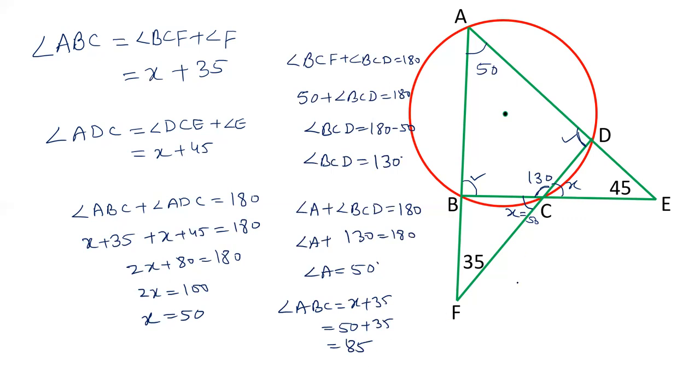And the last one is angle ADC. So this angle is 85. ADC is X plus 45. X is 50 plus 45, that is 95. So this angle is 95.